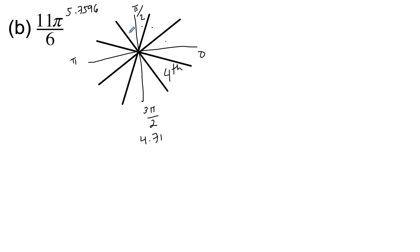So what I've done is I split my π into 6 parts: 1, 2, 3, 4, 5, 6. My denominator is 6. But I have 11 of those 6 parts. So 1, 2, 3, 4, 5, 6, 7, 8, 9, 10, 11. So I am here, in the fourth quadrant.